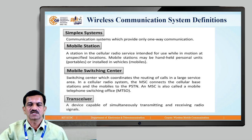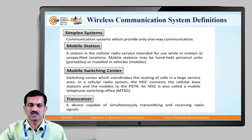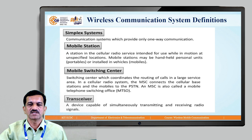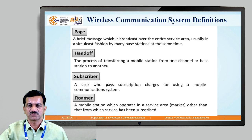Transceiver: whatever handheld equipment is there — the mobile stations — they are used as a transceiver. A transceiver is a device capable of simultaneously transmitting and receiving radio signals.